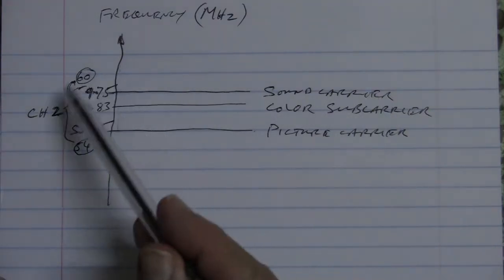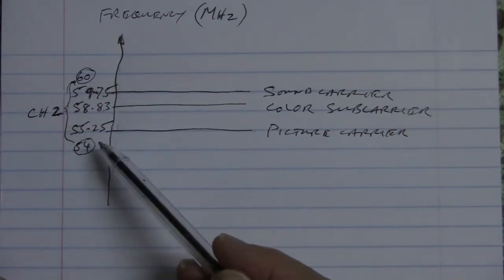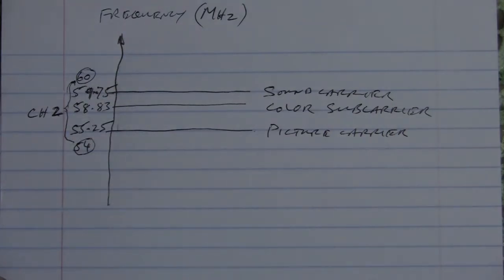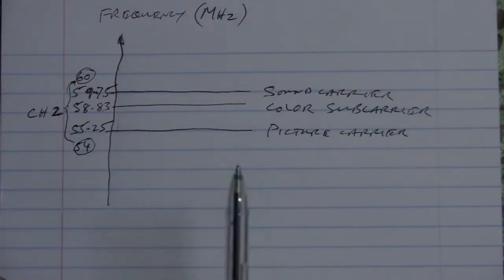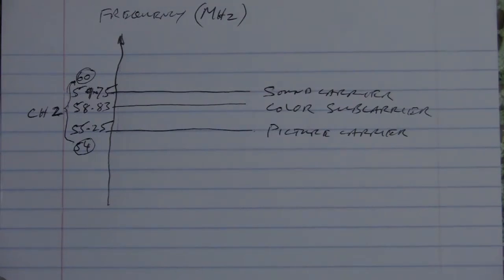Now what are we going to do with this to convert it to an intermediate frequency? In superheterodyne systems, which is what we were studying in radio, we use a local oscillator and the frequency of the radio station was down-converted to a lower frequency. In the case of AM radio, the local oscillator always runs 455 kHz above the particular radio station you're trying to receive. Television works on the same principle.